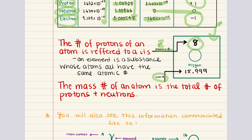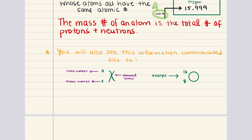Then we have the mass number, sometimes represented with the letter A. This is the total number of protons and neutrons in an atom's nucleus. Neutrons and protons are collectively known as nucleons, and their sum gives us the mass number. The difference between the mass number and the atomic number is the number of neutrons in the nucleus, and it's important to note that the mass number is not the same as the atomic weight. You may also see this conveyed with the elemental symbol, the mass number in the upper left corner, and the atomic number in the lower left corner — for oxygen, that would be O with mass number 16 and atomic number 8.